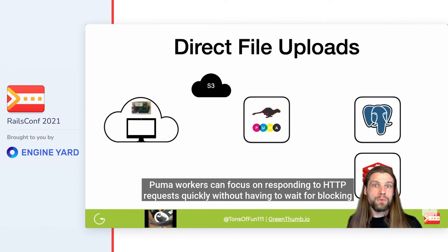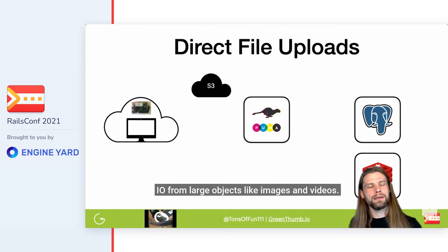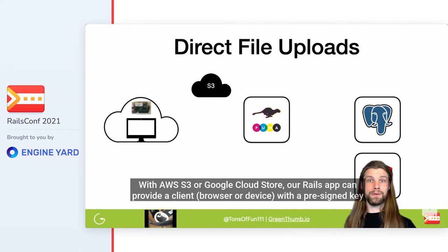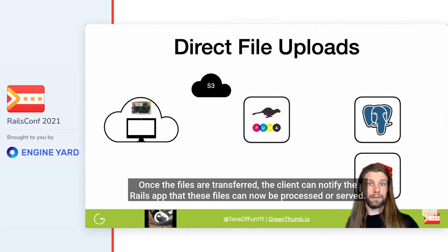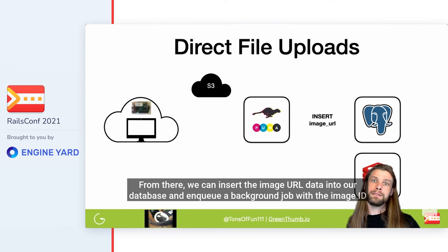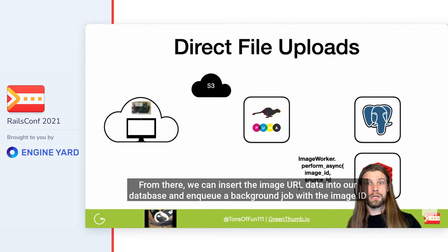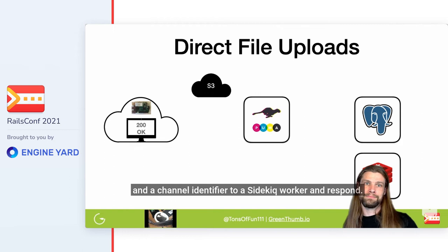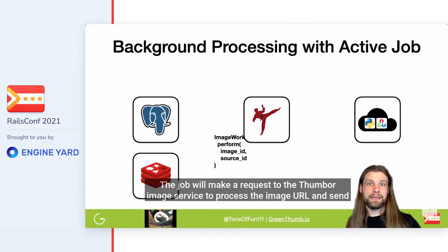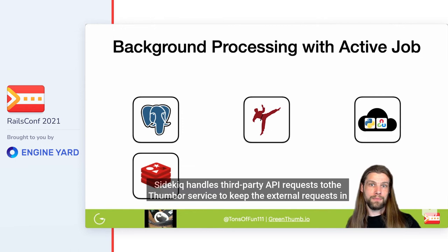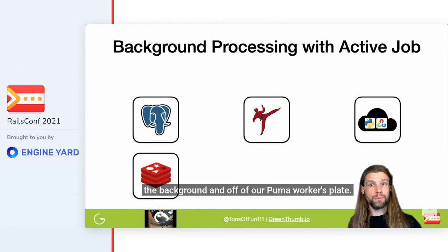Direct file uploads are a great way to relieve pressure on our Rails apps. Puma workers can focus on responding to HTTP requests quickly without having to wait for blocking I/O from large objects like images and videos. With AWS S3 or Google Cloud Storage, our Rails app can provide a client browser or device with a pre-signed key to upload files directly to our storage service. Once the files are transferred, the client can notify the Rails app that these files can now be processed or served. From there, we can insert the image URL data into our database and enqueue a background job with the image ID and a channel identifier to a Sidekiq worker, and respond OK.